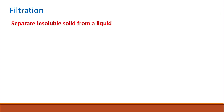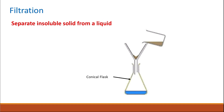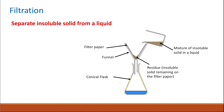Starting off with filtration. Filtration is used to separate insoluble solids from a liquid. In filtration, you would have a conical flask, funnel, and filter paper. The mixture of the insoluble solid and a liquid in a beaker is filtered through the filter paper, where the residue — which is the insoluble solid — remains on the filter paper, and the collected liquid in the flask is the filtrate, which is the solvent or the liquid.